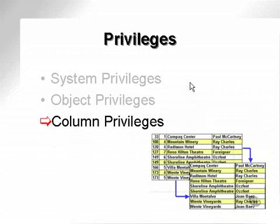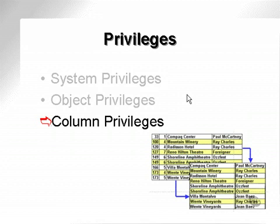Column privileges. Let's recap a little. System privileges allow a user to do things with database objects, such as create tables, change tables, etc. Object privileges allow the allocation of access to tables between users — in other words, allow an application user to access one of the concepts tables. Column privileges go a little bit further than object privileges in that they allow the specification of access on tables to specific columns within a table.